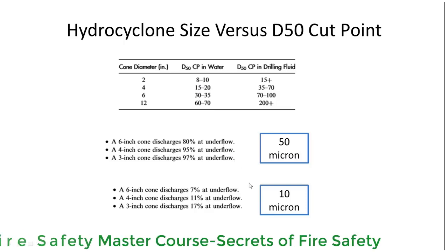On the other hand, for 10 micron particles, a 6 inch cone discharges only 7%, a 4 inch cone discharges 11% at the underflow, whereas a 3 inch cone discharges only 17% at the underflow.